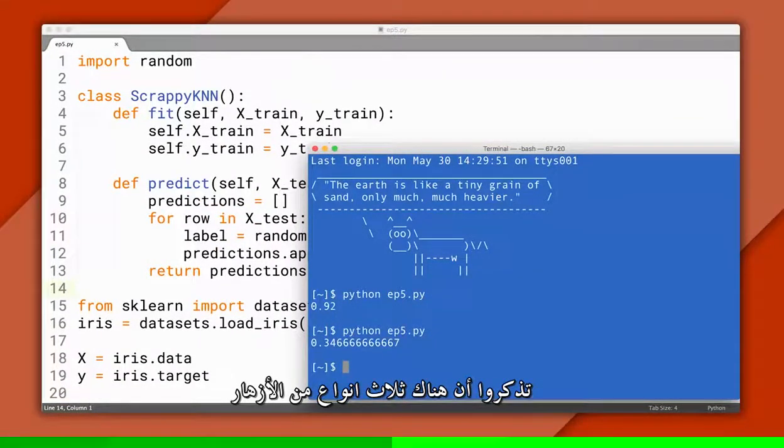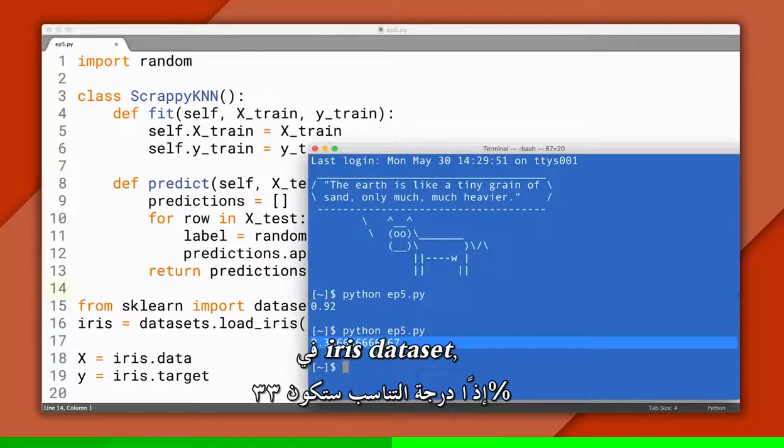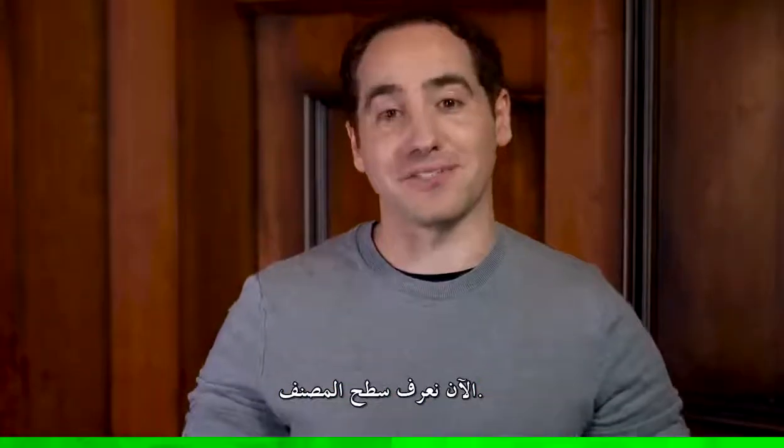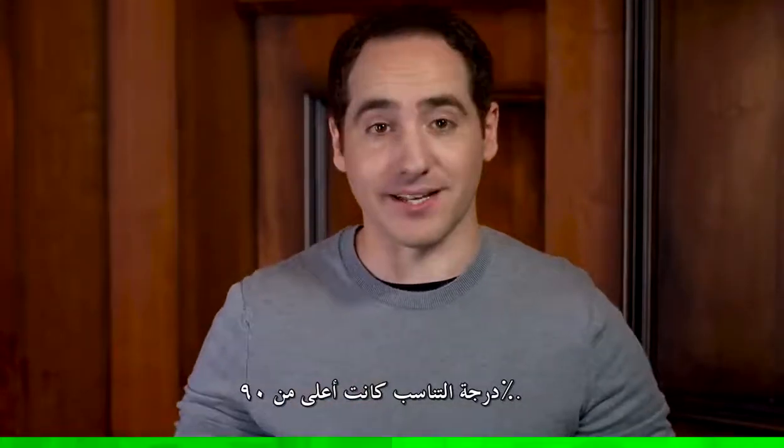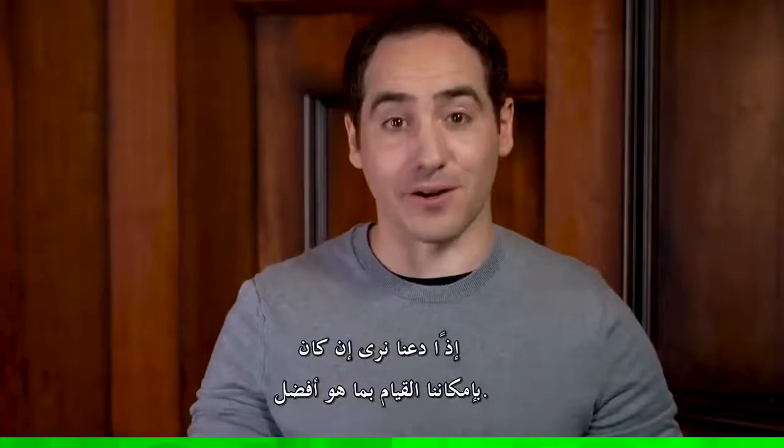Recall there are three different types of flowers in the iris dataset, so our accuracy should be about 33%. Now we know the interface for a classifier, but when we started this exercise, our accuracy was above 90%. So let's see if we can do better.